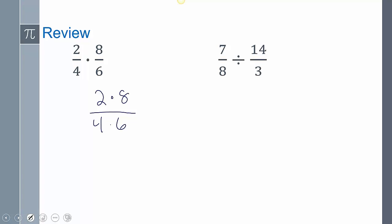So I could actually break this down even more. This is 2 times, and then 8 is 2 times 4. And then I have a 4, and then I could do 6 is 2 times 3. The 4s will cancel out, the 2s will cancel out, and so I'm left with 2 over 3.